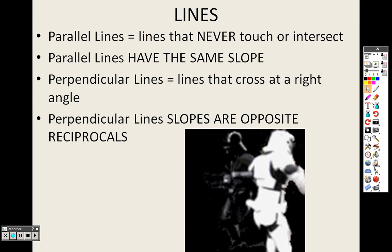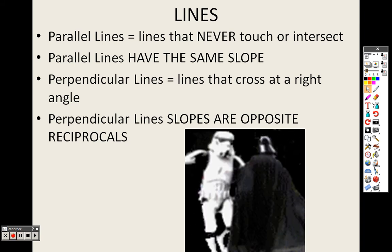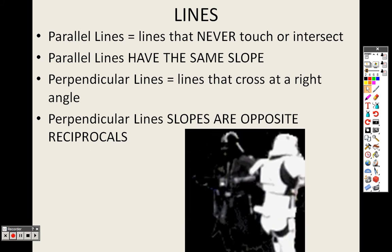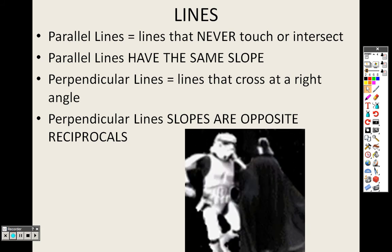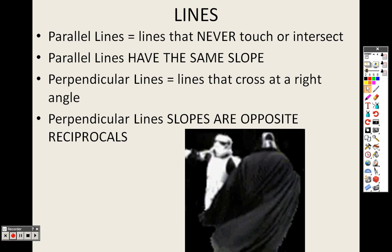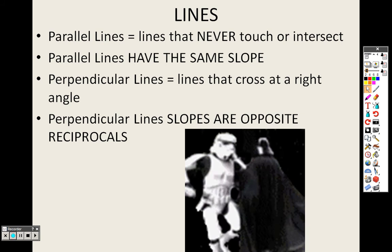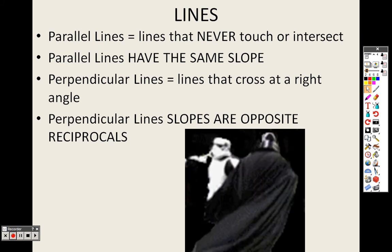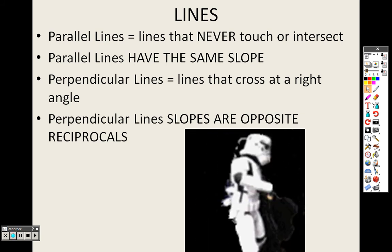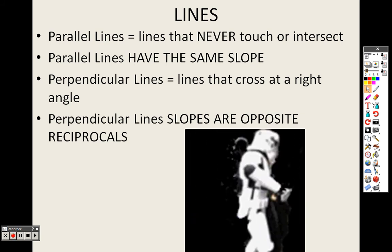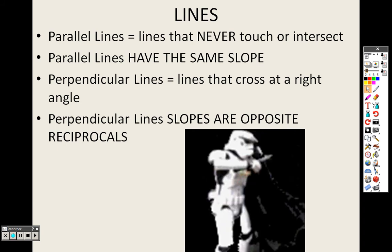It works the same even with negatives. If I gave you -1/7, you'd flip it to get -7/1, then make it negative. Negative times negative gives you positive 7, so you're just doing the opposite to it.